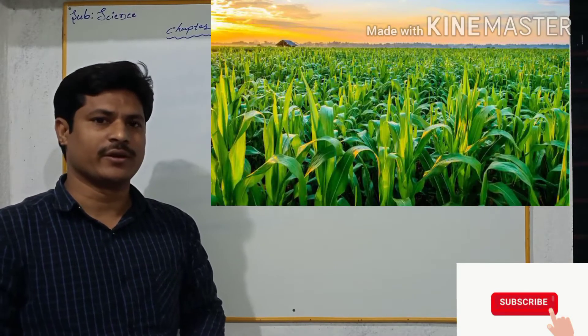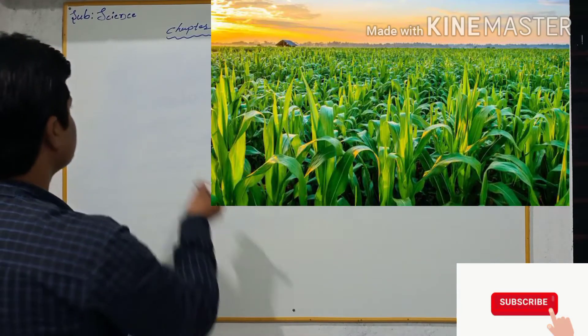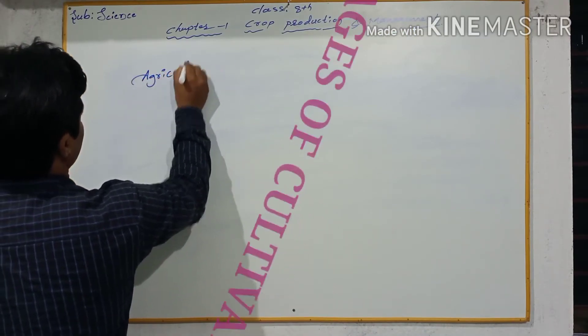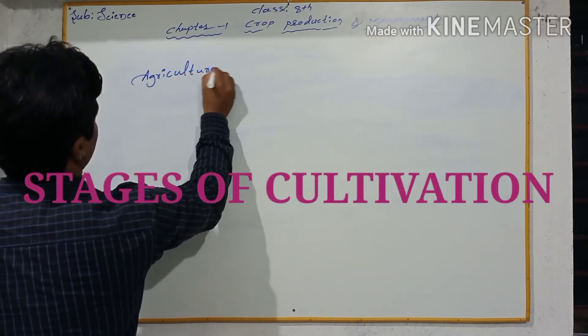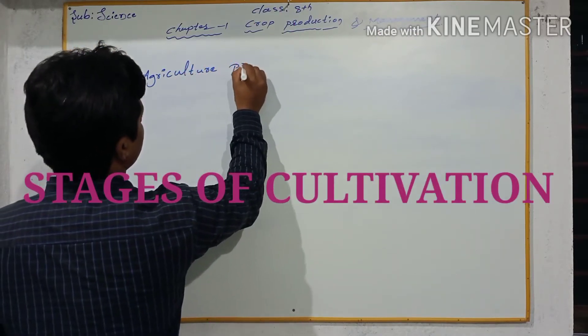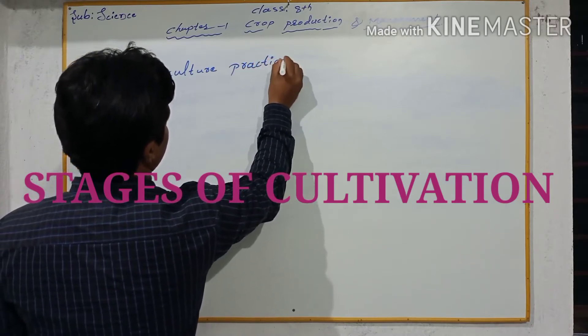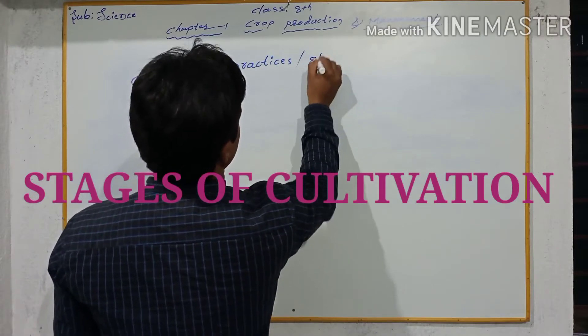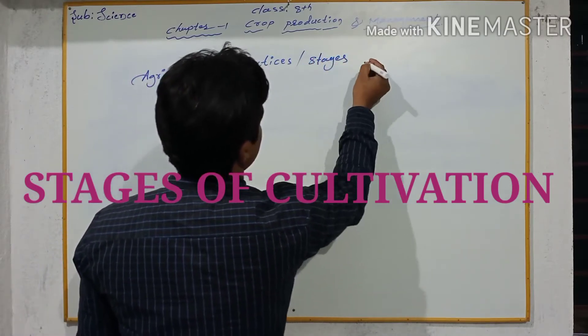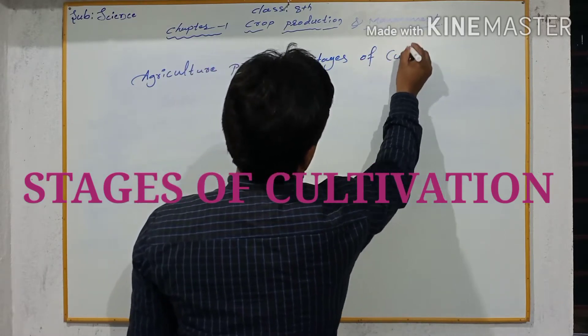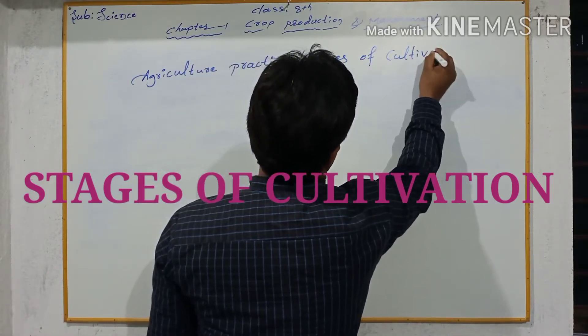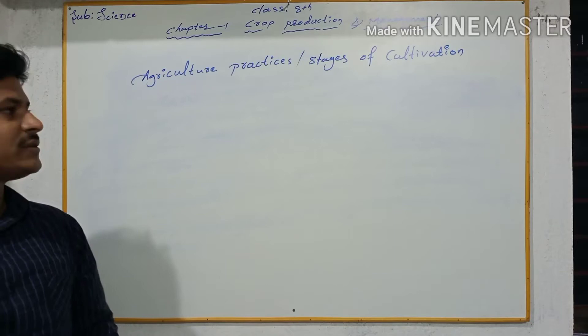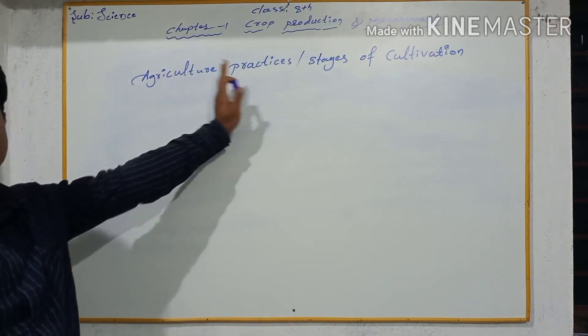Hi students, let's continue the lesson. Agriculture practices or stages of cultivation. There are five main stages of cultivation or good agricultural practices.